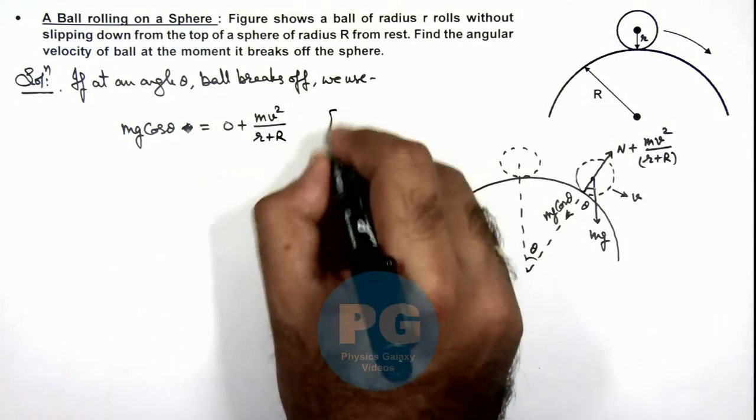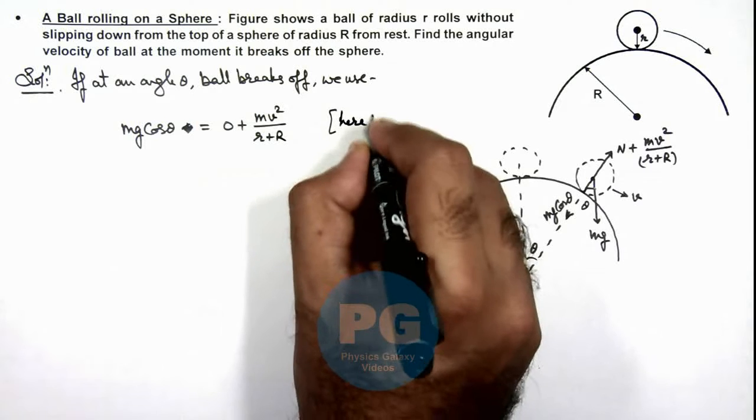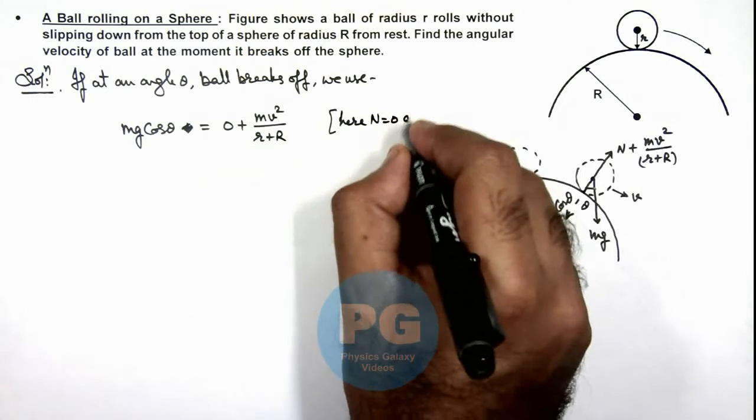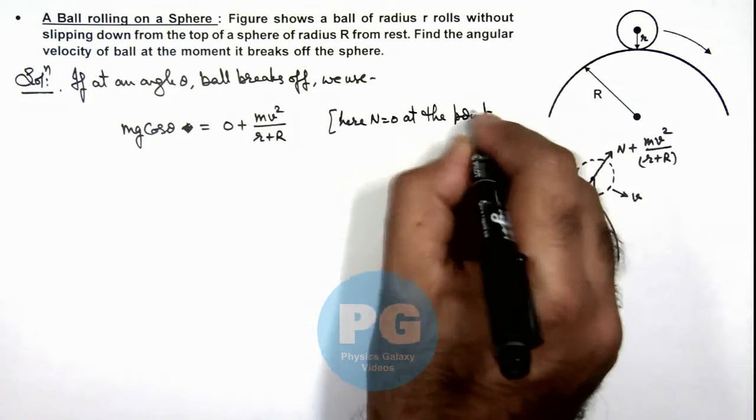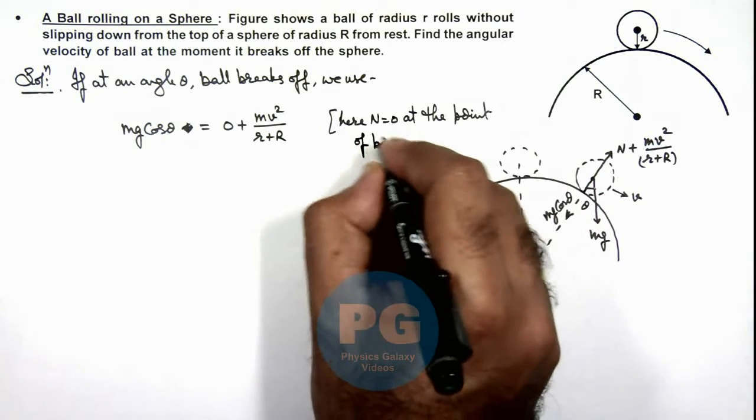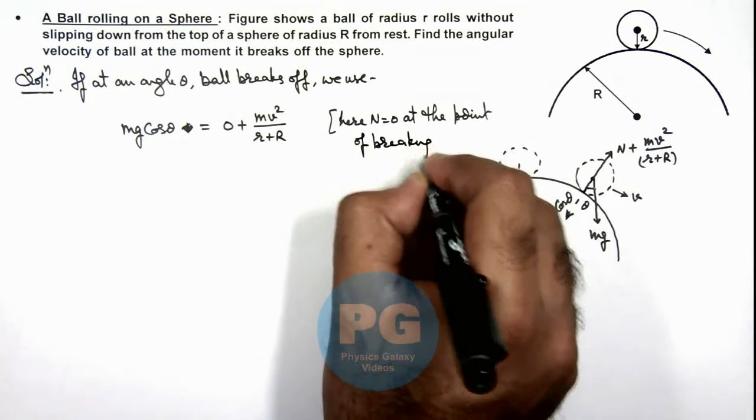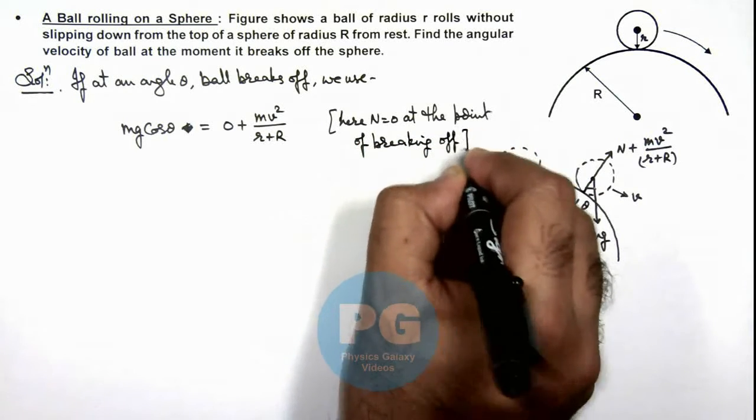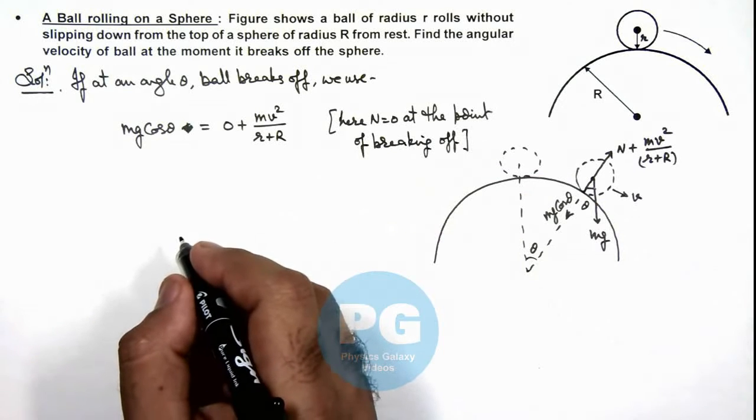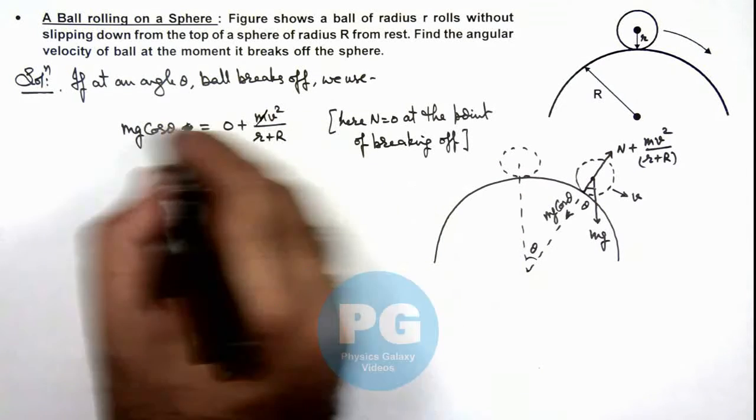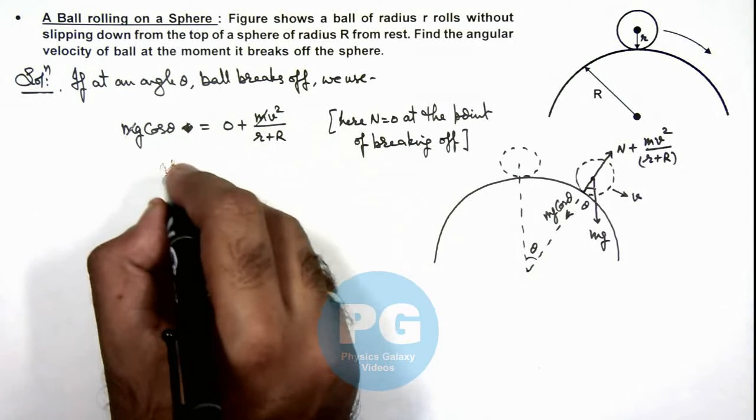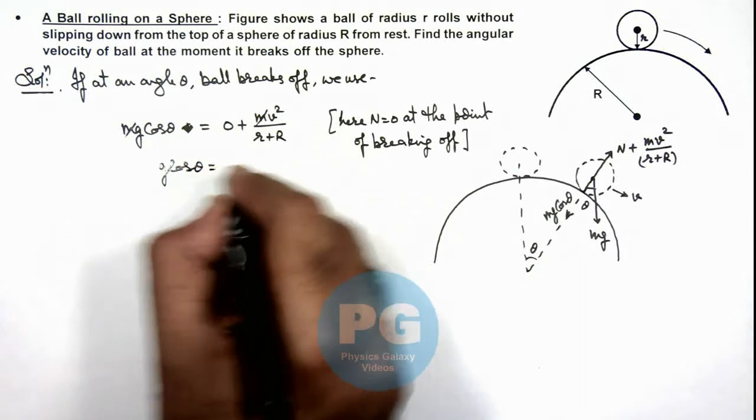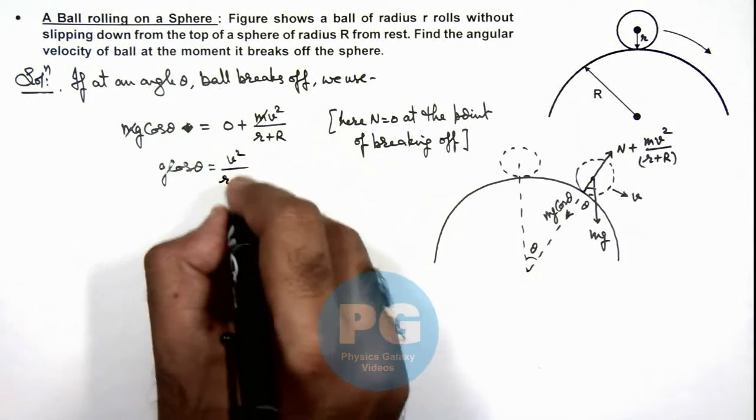Here we are taking N equals zero at the point of breaking off. So in this situation, m gets cancelled out and we get a relation that g cos theta equals v²/(r+R).